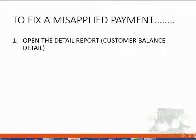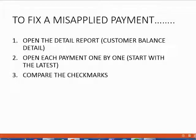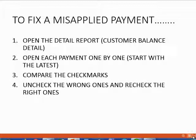To fix a misapplied payment, here's what you do. First, open up the detail report — in our computer, that's the customer balance detail. Second, open each payment one by one, starting with the latest. Start at the bottom of the customer section in the customer balance detail and open only the payments. Third, compare the check marks in the payments to what the customer is telling you regarding where the payment should be applied. If the customer disagrees and wants the payment applied to a different invoice, you have to uncheck the wrong invoices and recheck the correct invoices to reapply the payment.